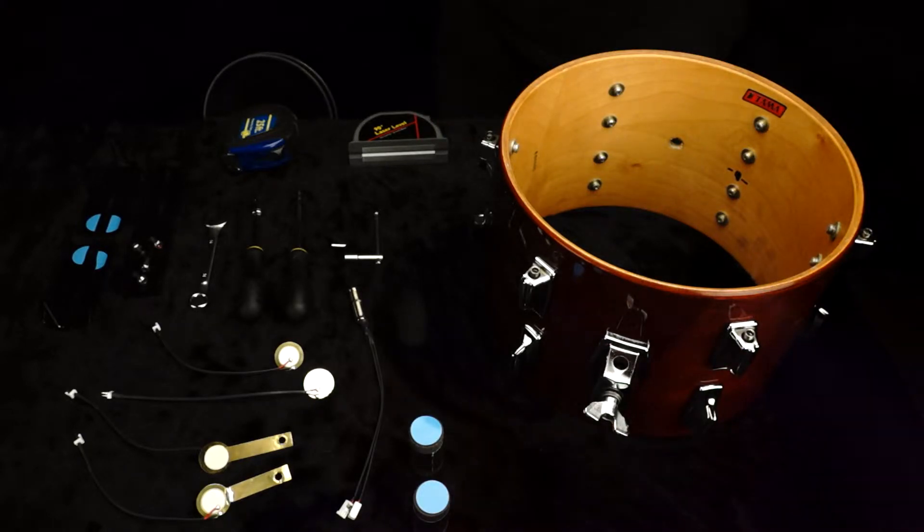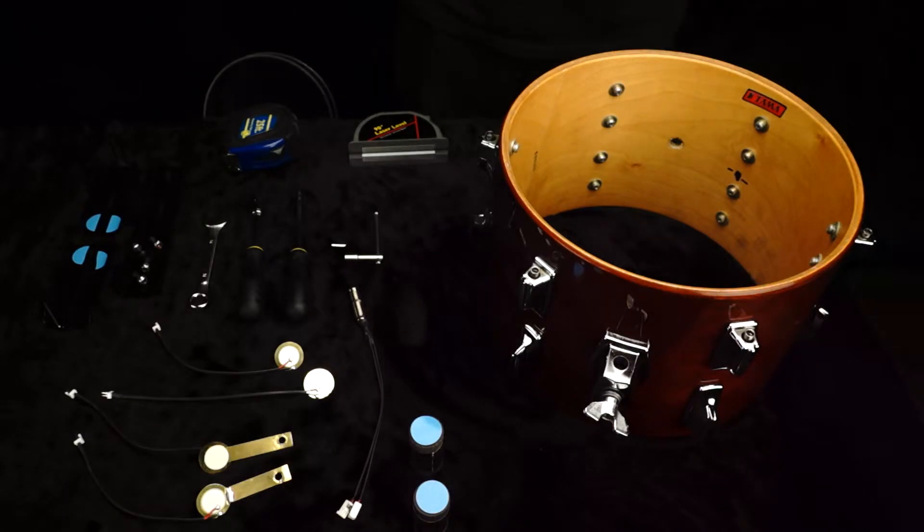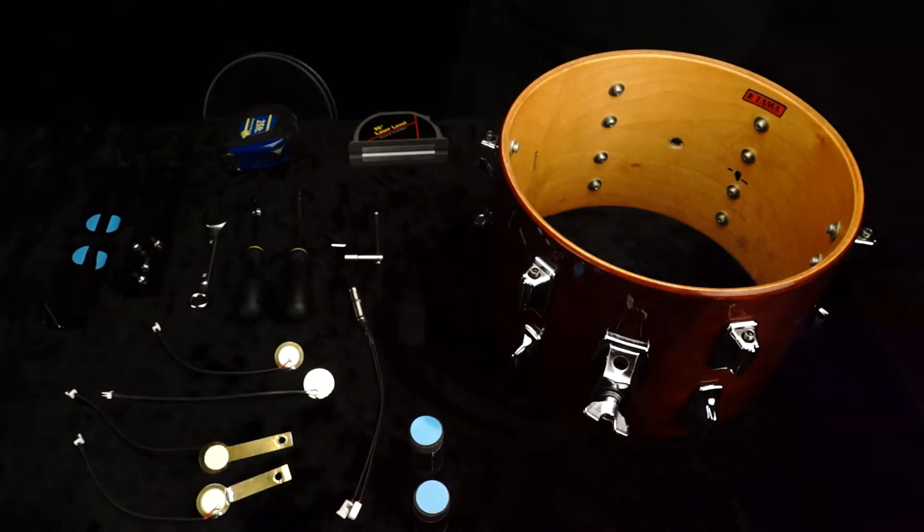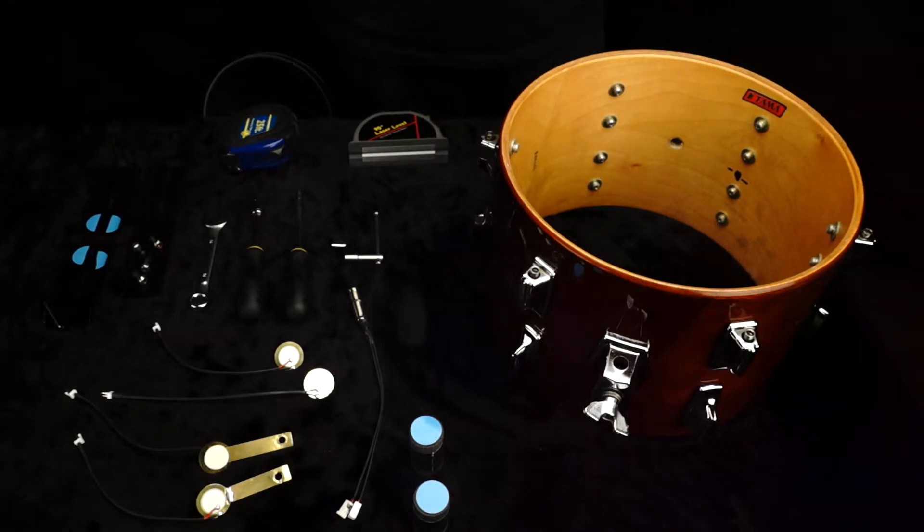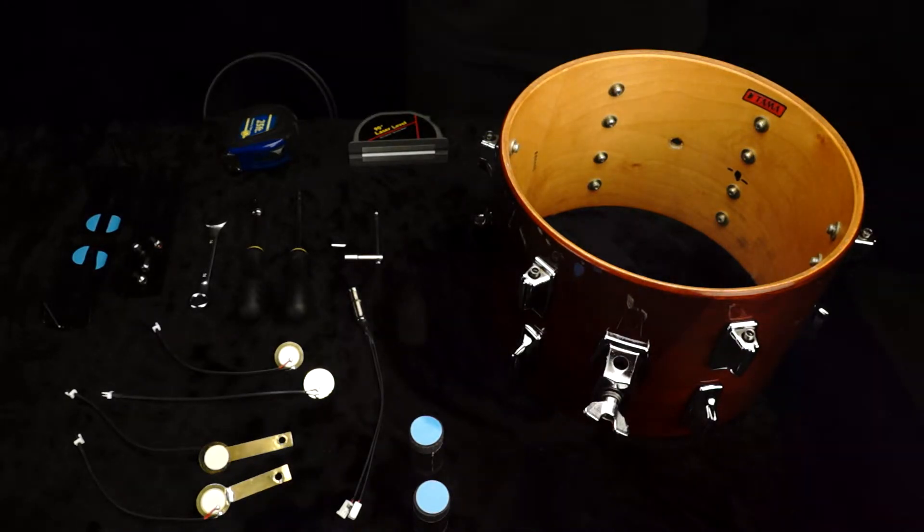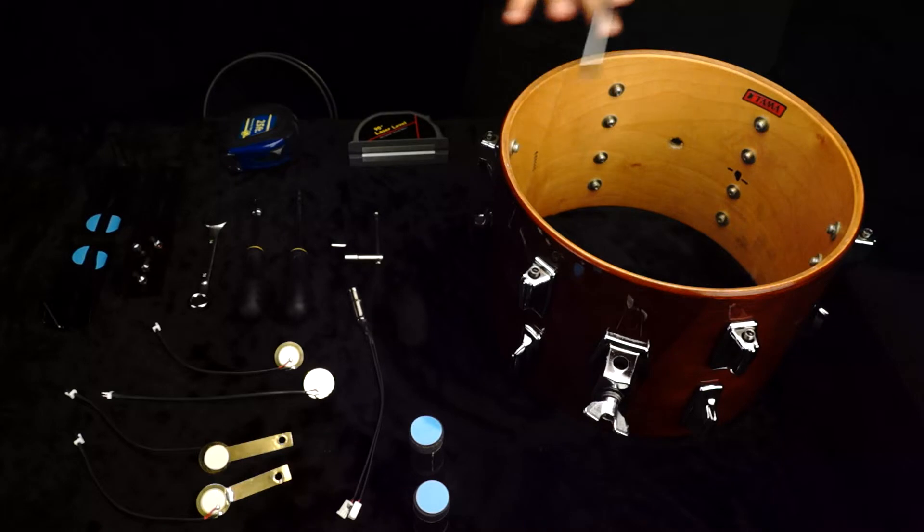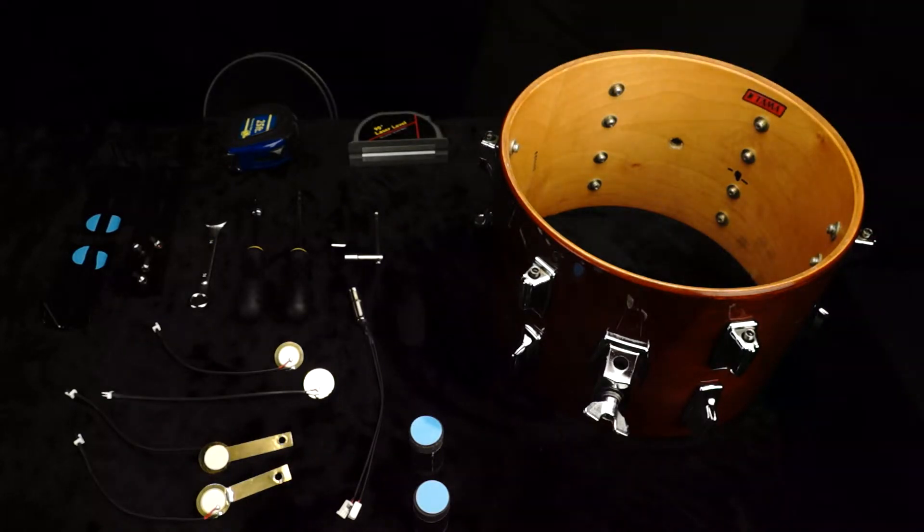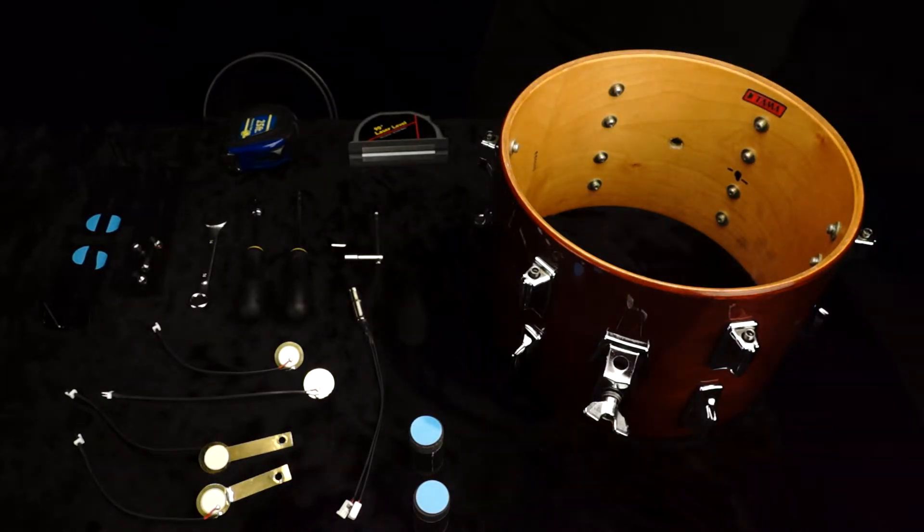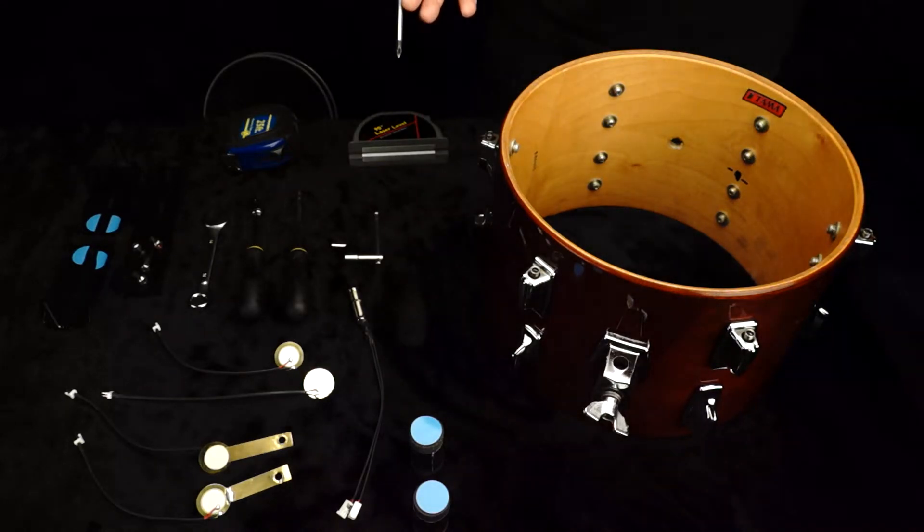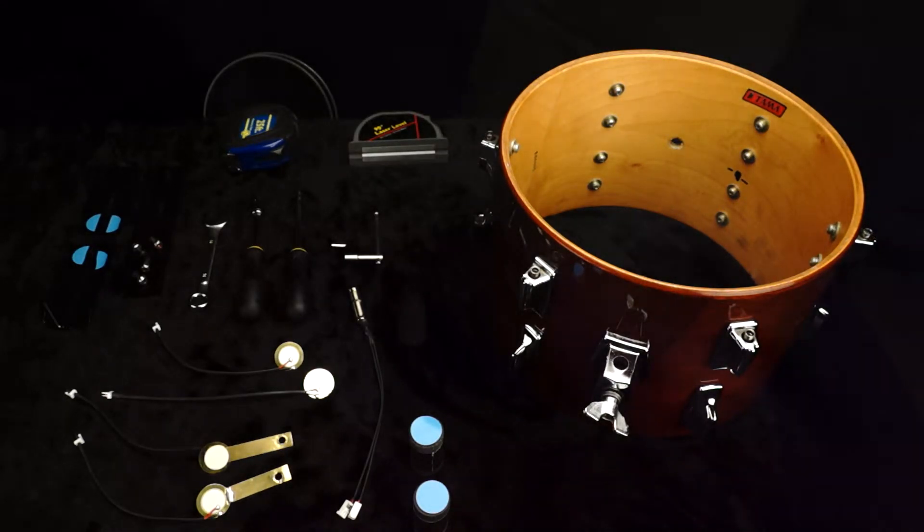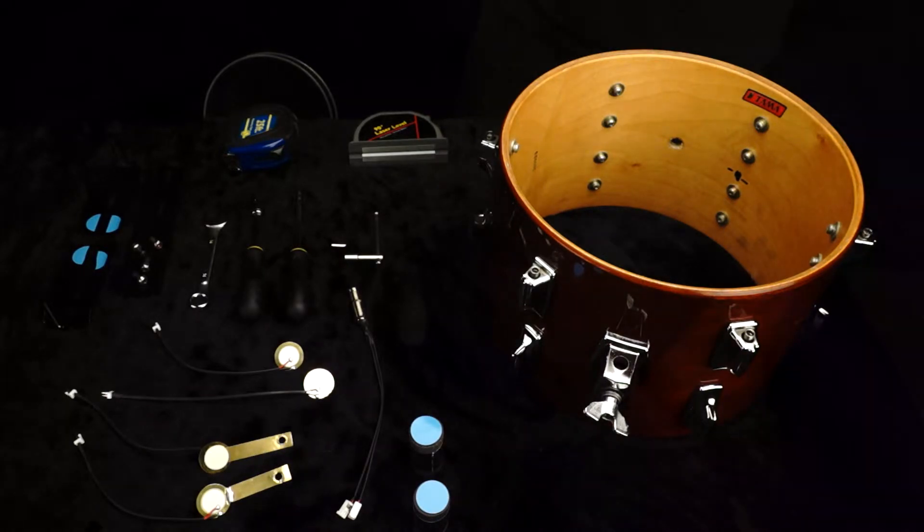I want to talk about the first thing we need to do when ordering our Pintech USA acoustic drum to MIDI conversion. The first thing we want to cover is the size of the shell. So this is a 12-inch shell. We're going to send all of the sizes of all the drums that will be converting to Pintech.